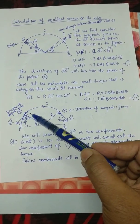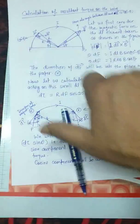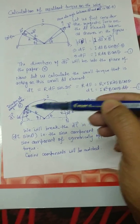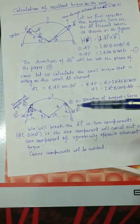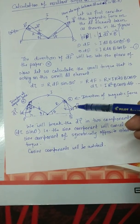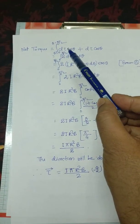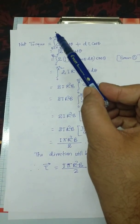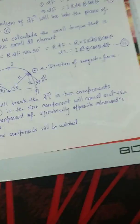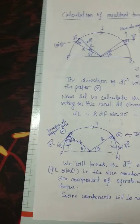The direction of torque from R cross F: R is along the radius and F is into the plane, giving a tangential direction. Similarly, the small element on the other side experiences torque in a symmetric direction. We break these torques into two components: the sine components cancel each other, while the cosine components add together. Integrating the cosine components from theta = 0 to theta = pi gives the net torque as I pi R² B / 2, directed downward.